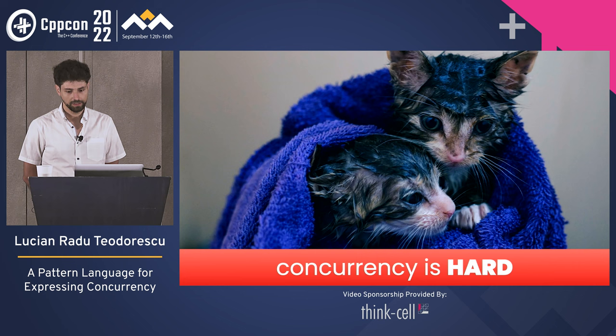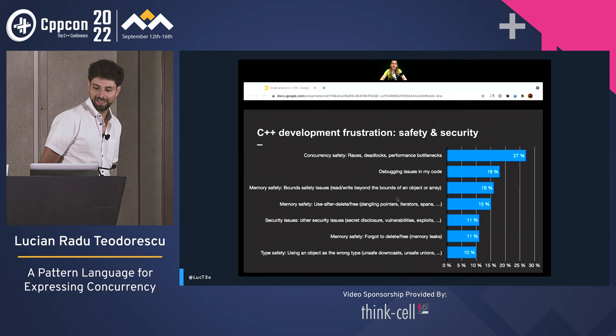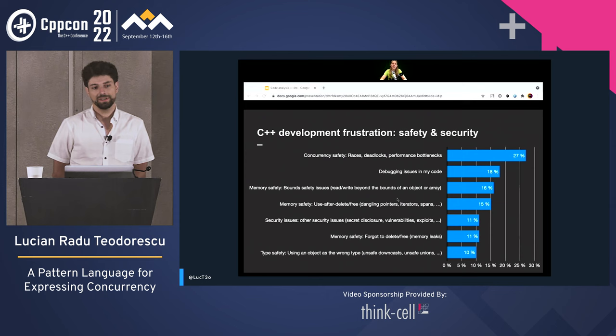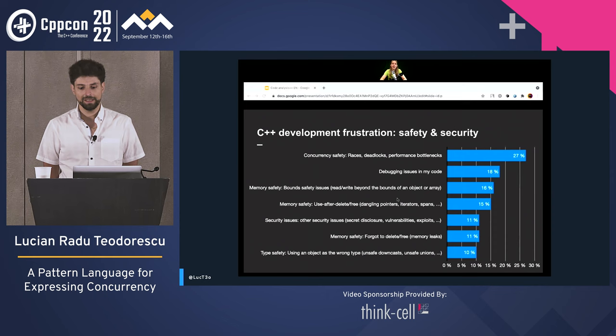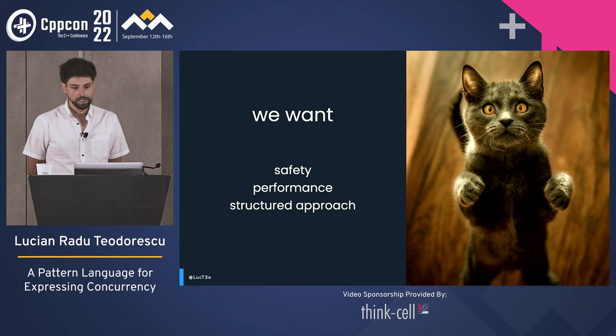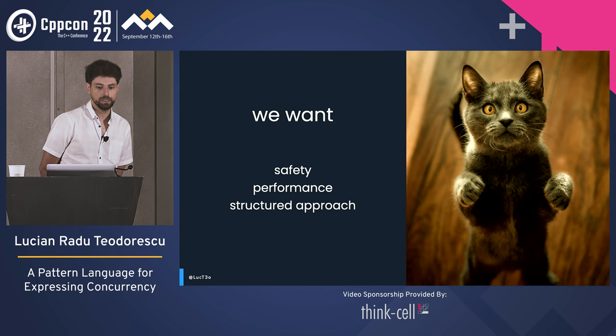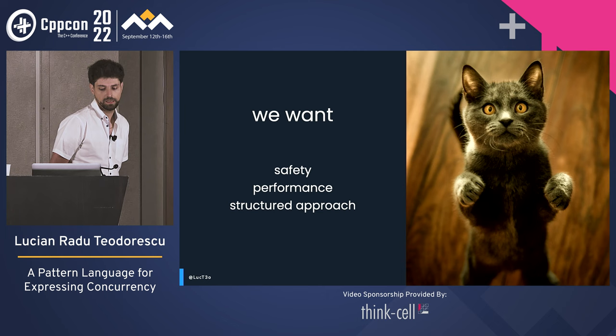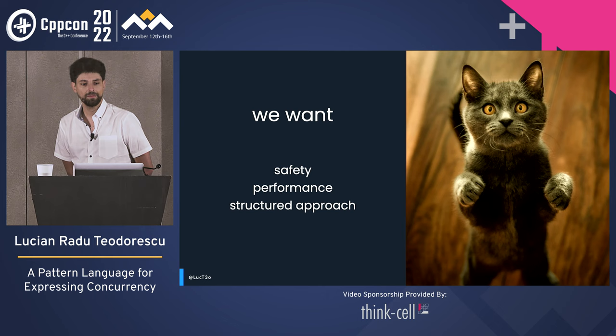The shocking truth is that concurrency is hard. There are studies to back it up. I really like this picture — Anastasia presenting the development of frustration in the C++ community. The first place is concurrency safety: races, deadlocks, performance bottlenecks. It's not even close to the next one. What we actually want is a system in which we can describe concurrency that has safety, performance, and a structured approach — like we use for structured programming.